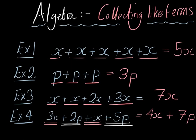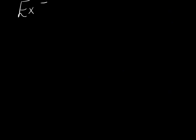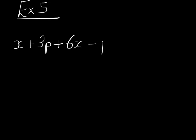And those are the four main examples. We'll do one more example just to deal with subtraction happening. Let's do an example with subtraction. So example 5. Let's say we had x plus 3p plus 6x, subtract a p, subtract 2x, and let's say plus 4p. What would we have?